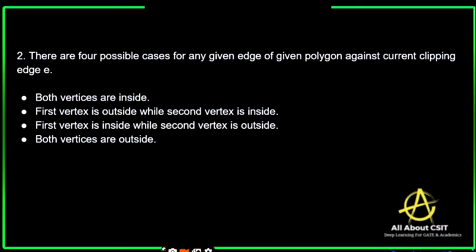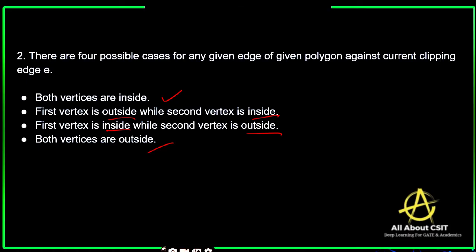There are four possible cases for any given edge against the current clipping edge E: first, both vertices are present inside; second, the first vertex is outside and the second is inside; third, the first vertex is inside and the second is outside; and fourth, both vertices are present outside.